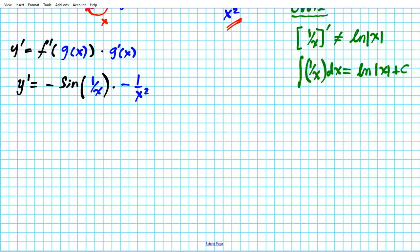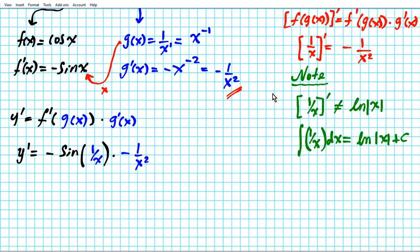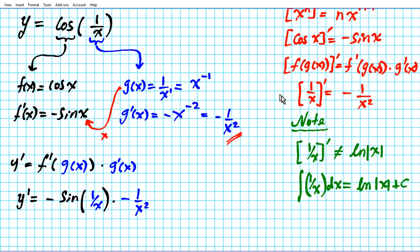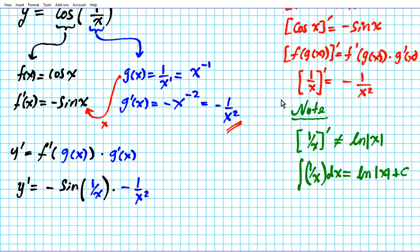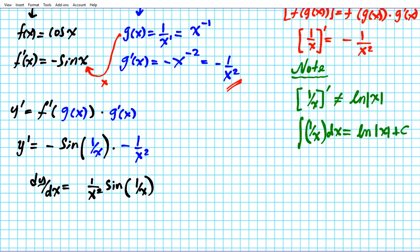Let's simplify and write our final answer. We have a negative times a negative, which makes it positive. So dy/dx equals 1 over x squared times sine of 1 over x. And that is the derivative of cosine of 1 over x.